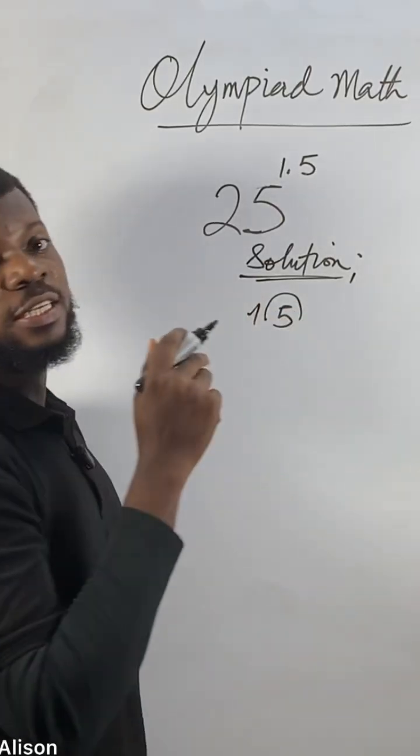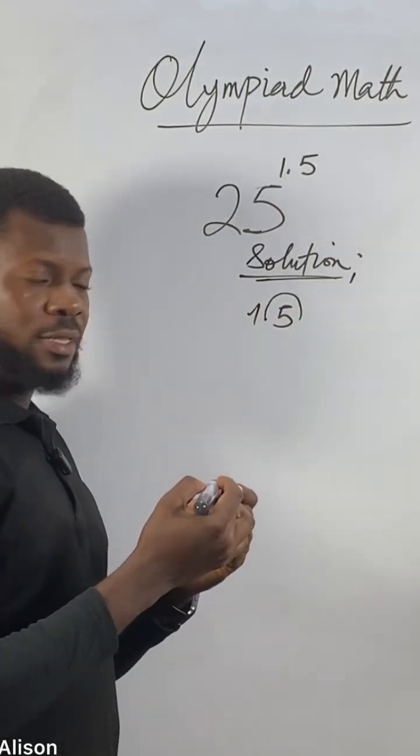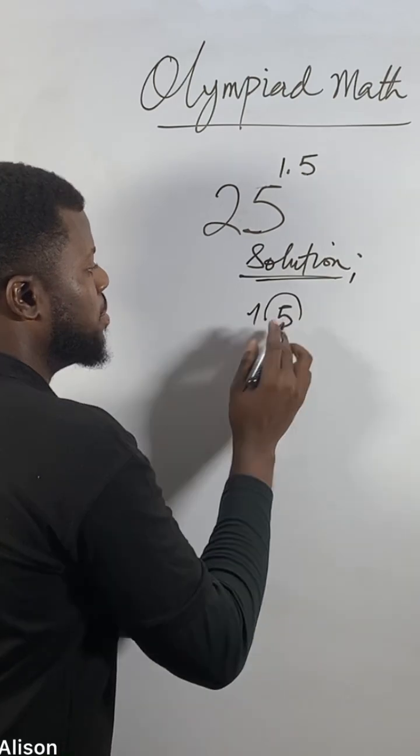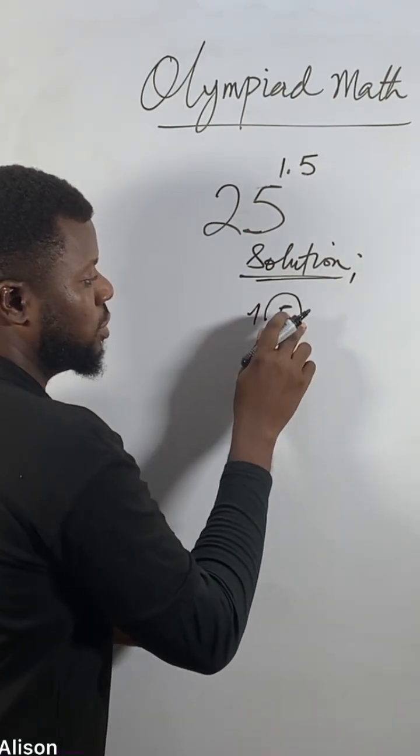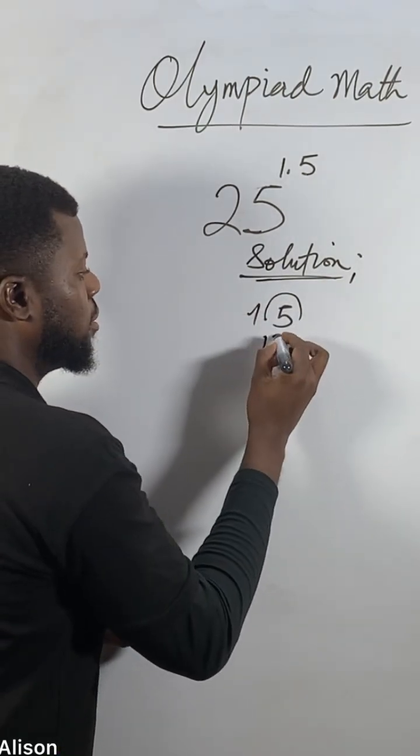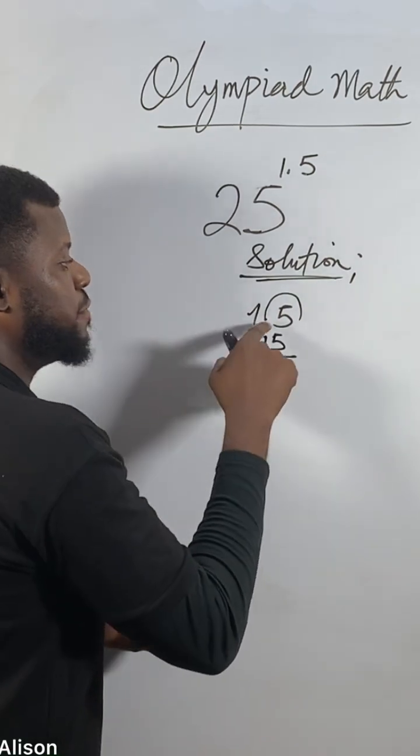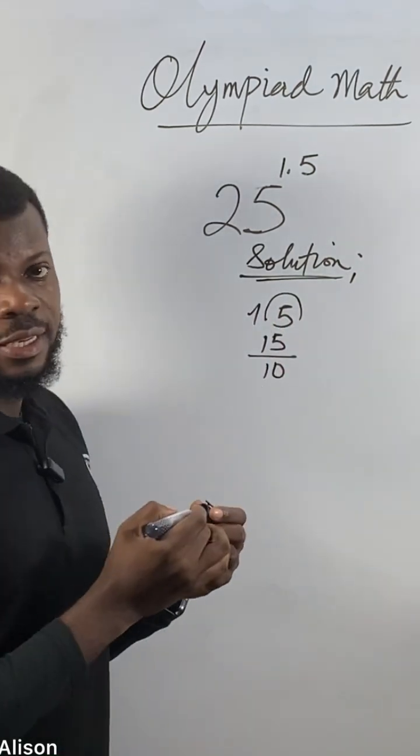If you divide by 10, by 100, by 1000, you move the decimal point once, twice, three times. Now I move on once - it means the decimal point comes before, which gives us 15 over 10. Remember I said if you move on once, now over 10.